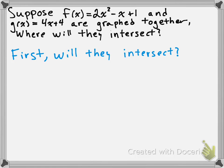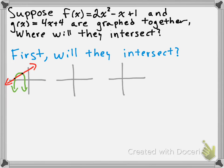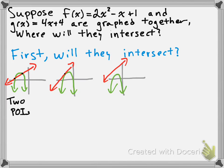There are three possibilities for a linear quadratic system. In the first case, you have a line and a parabola that cross at two different points. In the second case, you have a line and a parabola that cross at just one point. The third case is where you have a line and a parabola and they don't cross at all. So: two points of intersection, one point of intersection, or no points of intersection.